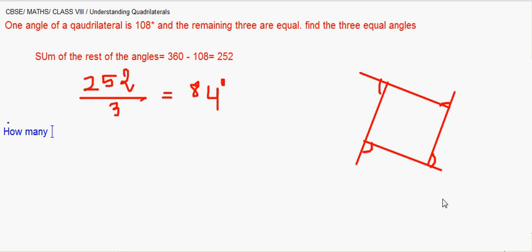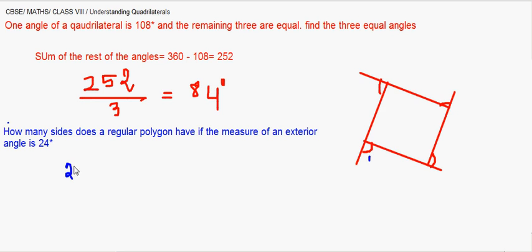The question says how many sides does a regular polygon have if the measure of an exterior angle is 24 degrees. Now if one of the angles is 24 degrees, suppose each angle is 24, suppose there are x number of such angles.